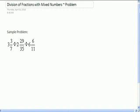Sample problem: 3 and 3/7 divided by 2 and 29/35 divided by 6 and 6/11. First step, convert all the mixed numbers into improper fractions.